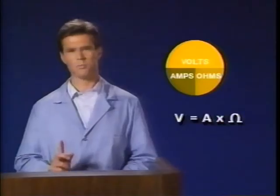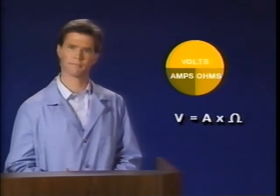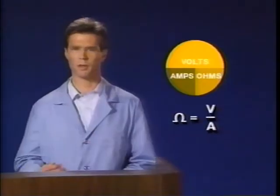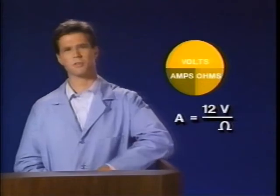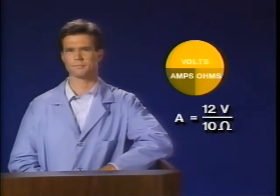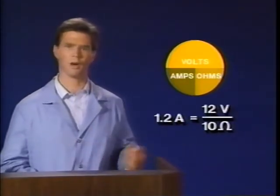Now that we have a description of current flow, let's see how volts, amps, and ohms affect each other. They're mathematically linked by Ohm's law. Ohm's law states that volts are equal to amps times ohms. Amps are equal to volts divided by ohms. Ohms are equal to volts divided by amps. Suppose a 12-volt circuit has a 10-ohm resistance. What is the amperage? 12 volts divided by 10 ohms equals 1.2 amps.